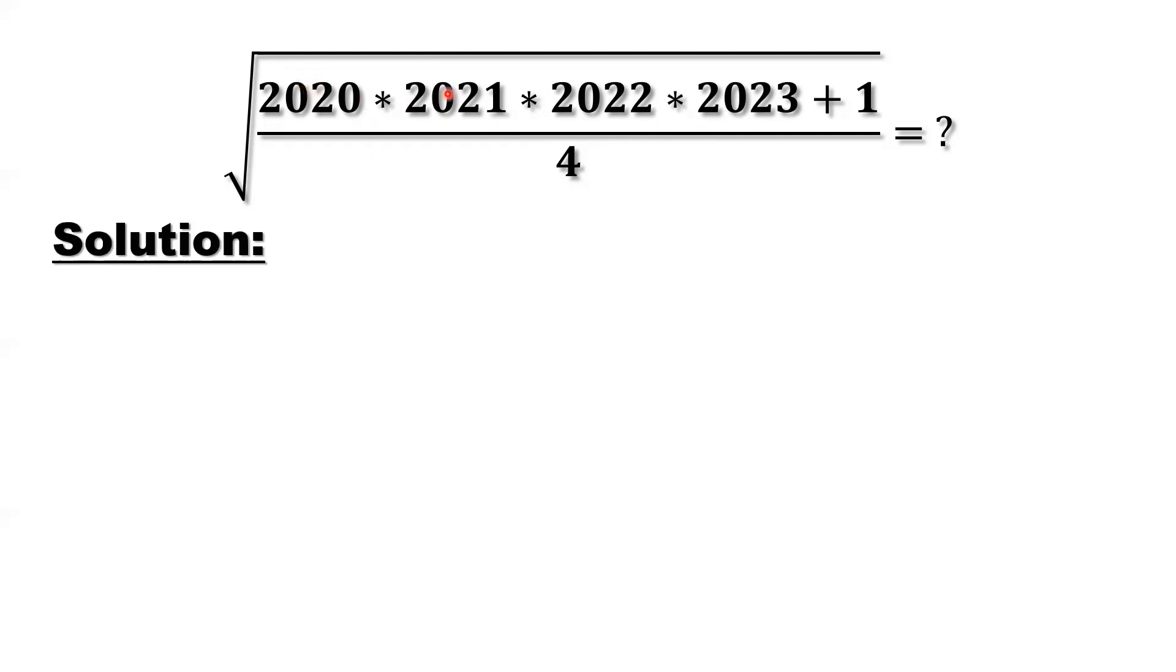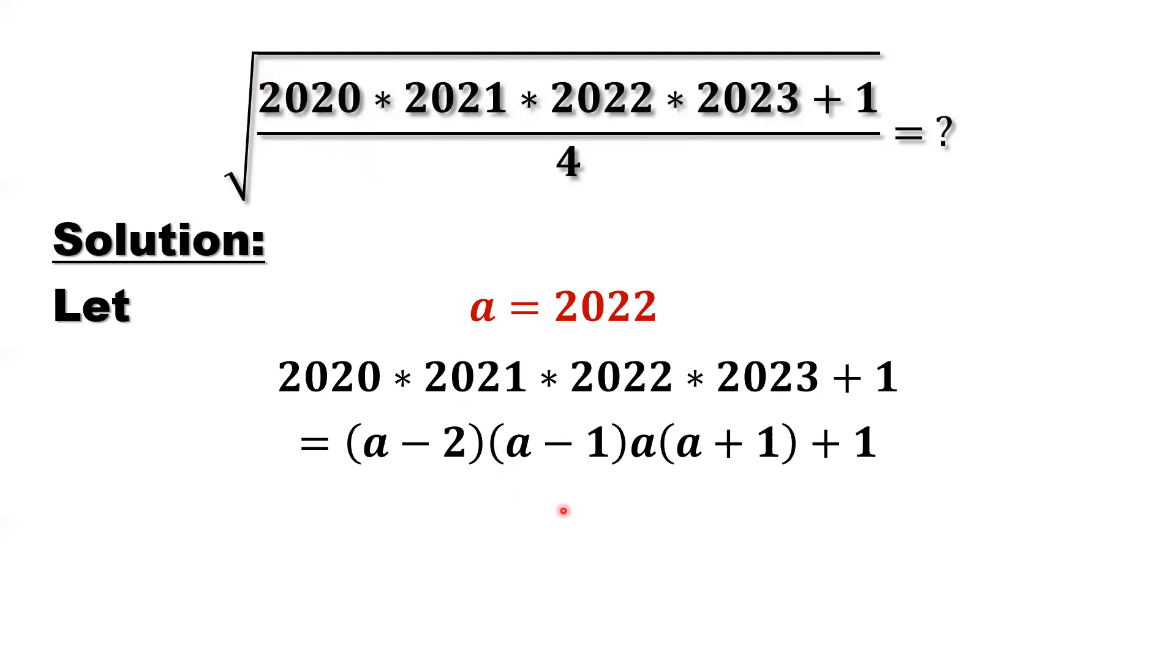For any consecutive numbers here, four consecutive numbers, we can always use the following method. What is consecutive number? The number increased by one, next to each other. We are assuming the third number, in our case, that's 2022. A equals this number. Rewrite the numerator inside of the root sign in terms of a. If this is a, the next number should be a plus one. The previous one should be a minus one, this one should be a minus two.